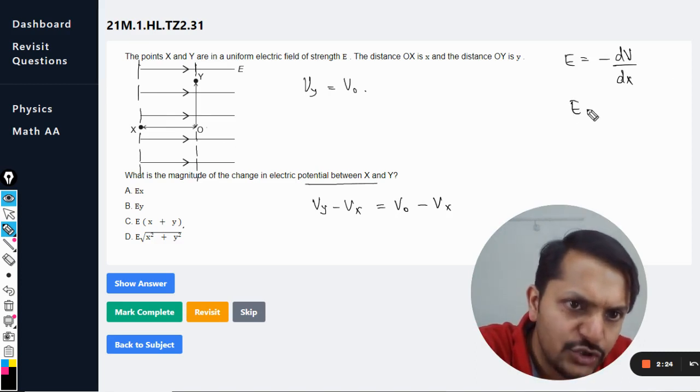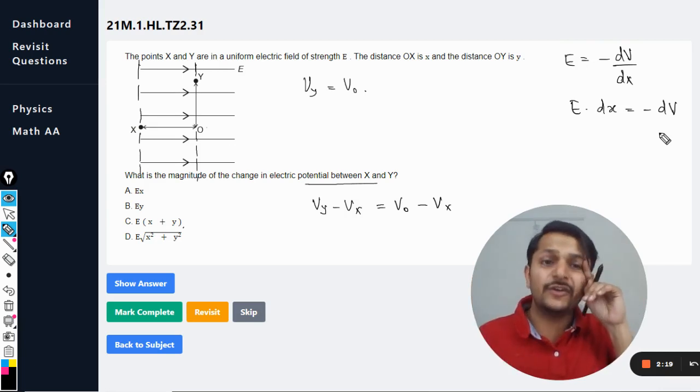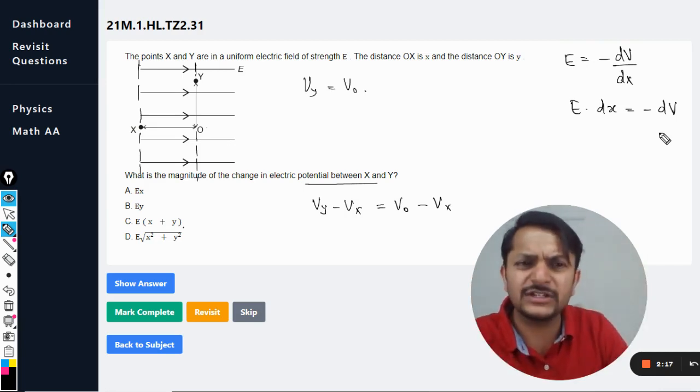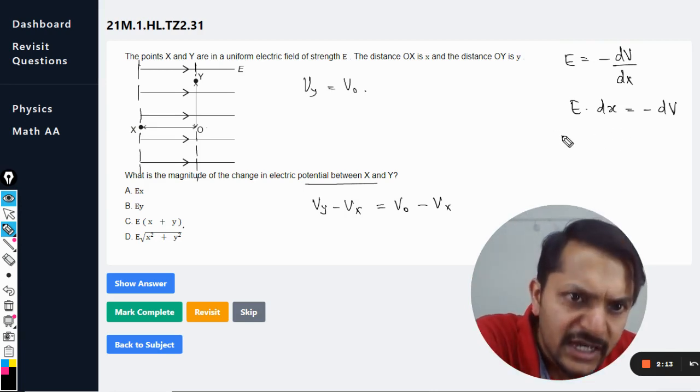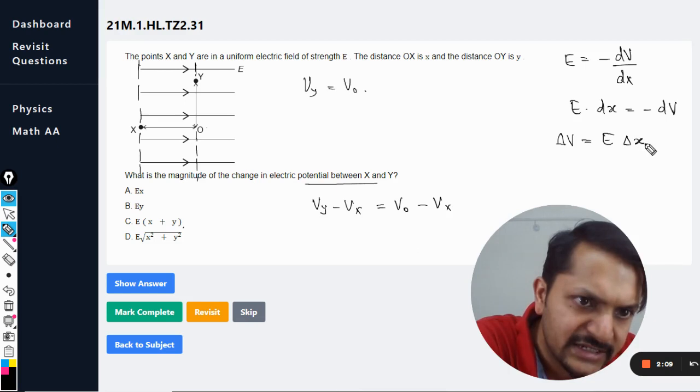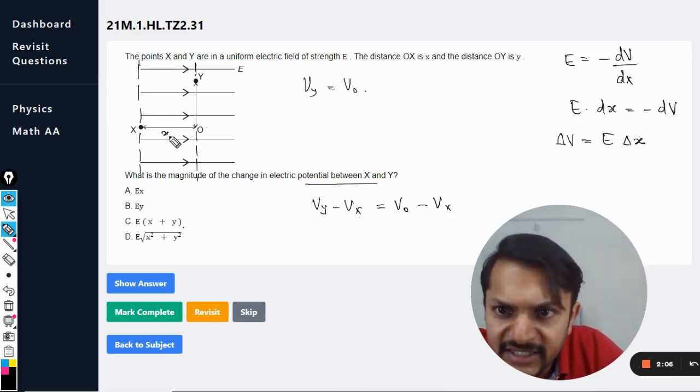So E is uniform, it is only dx here and minus dV. Although there is no need of delving into the calculus things here, but it's really simple. If you integrate it, you are going to get the delta V. The change in potential is E into delta x.